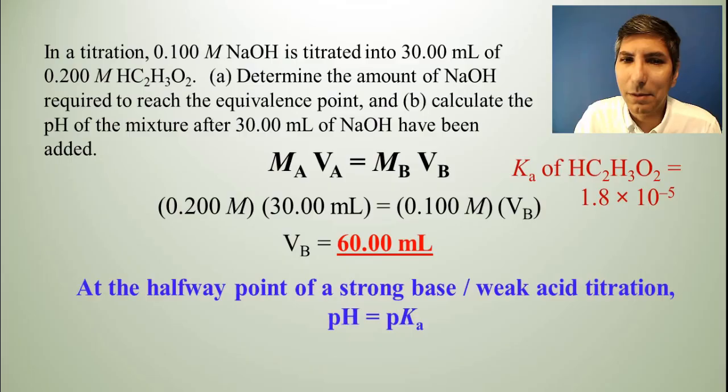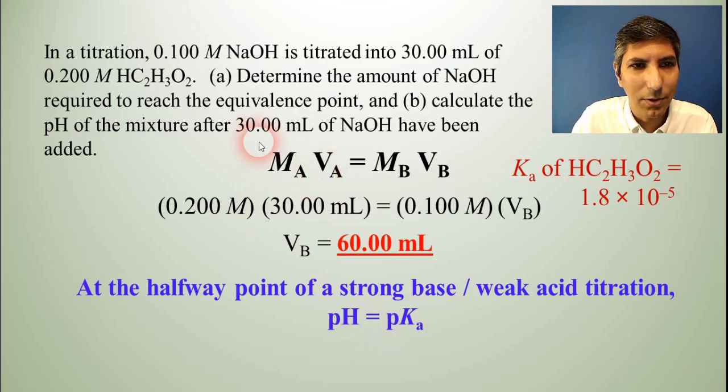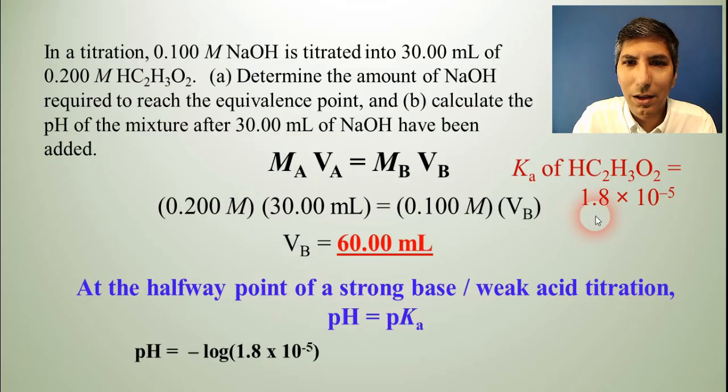Something that is true at the halfway point of a titration like this, pH is equal to the pKa of the acid. pKa just means negative log of the Ka, just like pH means negative log of H. So to find the pH at this halfway point, this 30 milliliters point, all we have to do is take the negative log of the Ka that's given to us in the problem. So negative log of 1.8 times 10 to the negative fifth is 4.74.